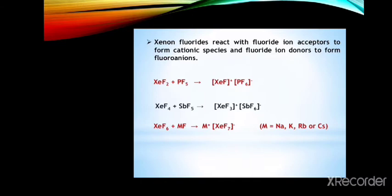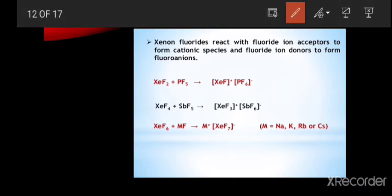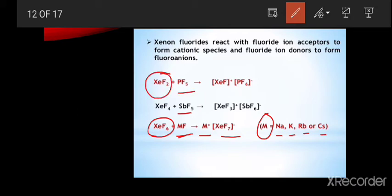Xenon fluorides react with fluoride ion acceptors like PF5 (phosphorus pentafluoride), SbF5, and MF (where M is a metal like sodium, potassium, rubidium, or cesium). They react with xenon hexafluoride to form cationic species and fluoroanions. Similarly, XeF2 reacts with PF5 and XeF4 reacts with SbF5 to form cationic species with fluoroanions.